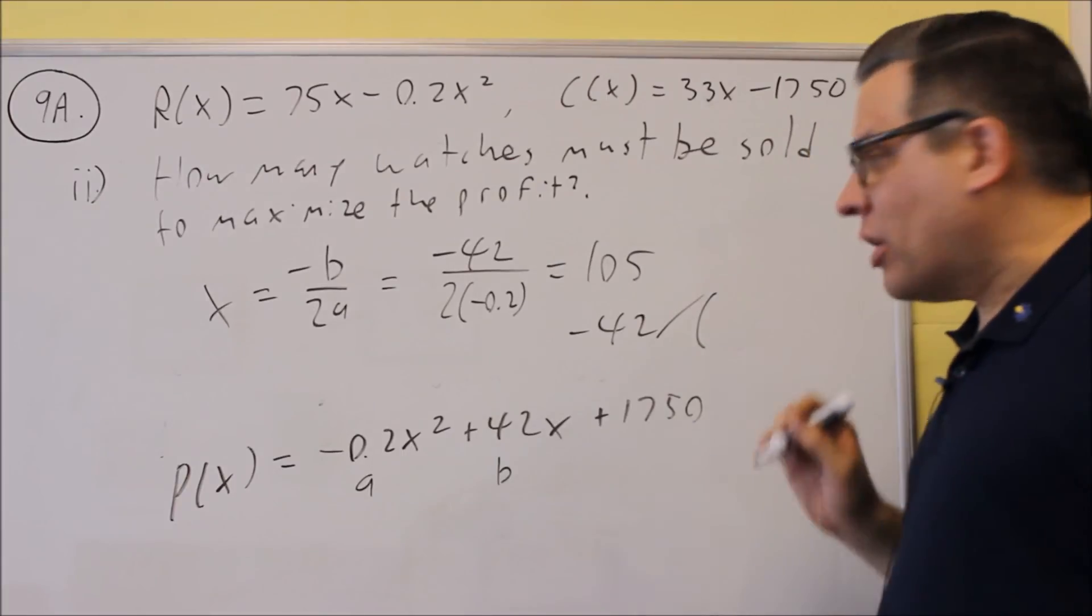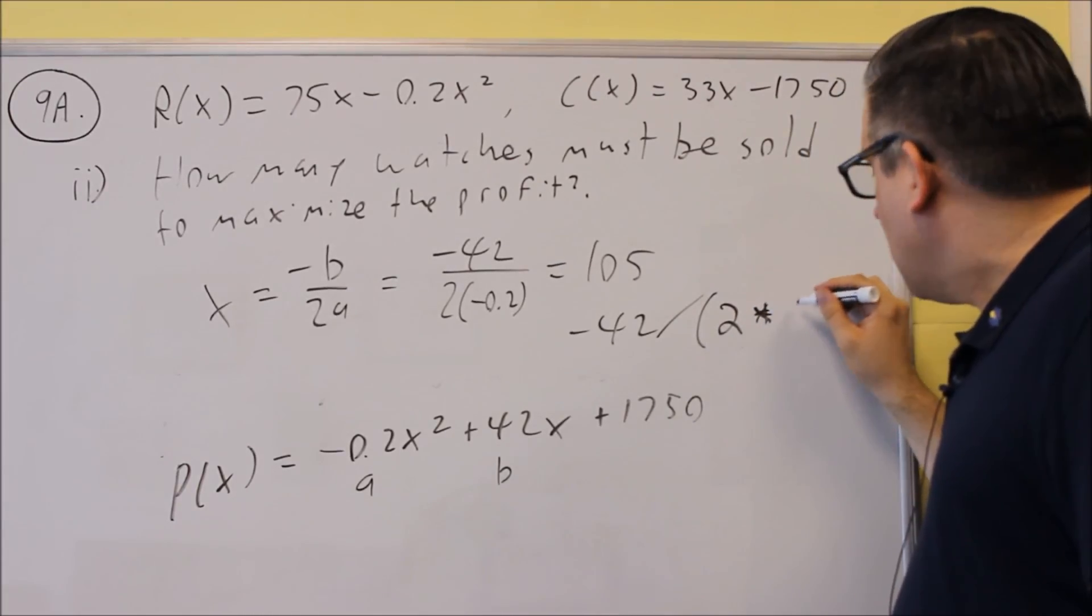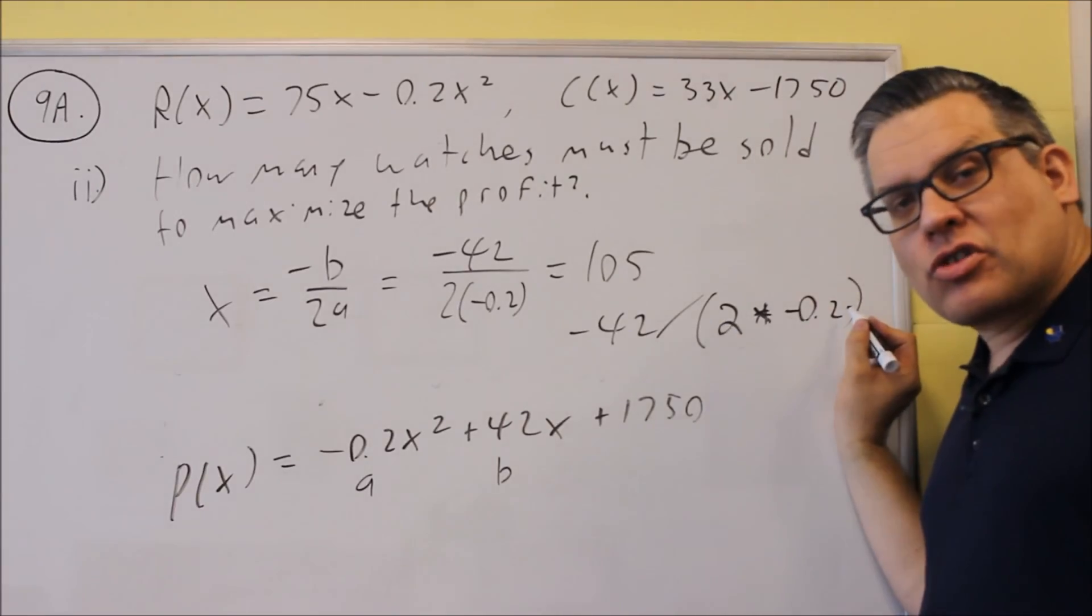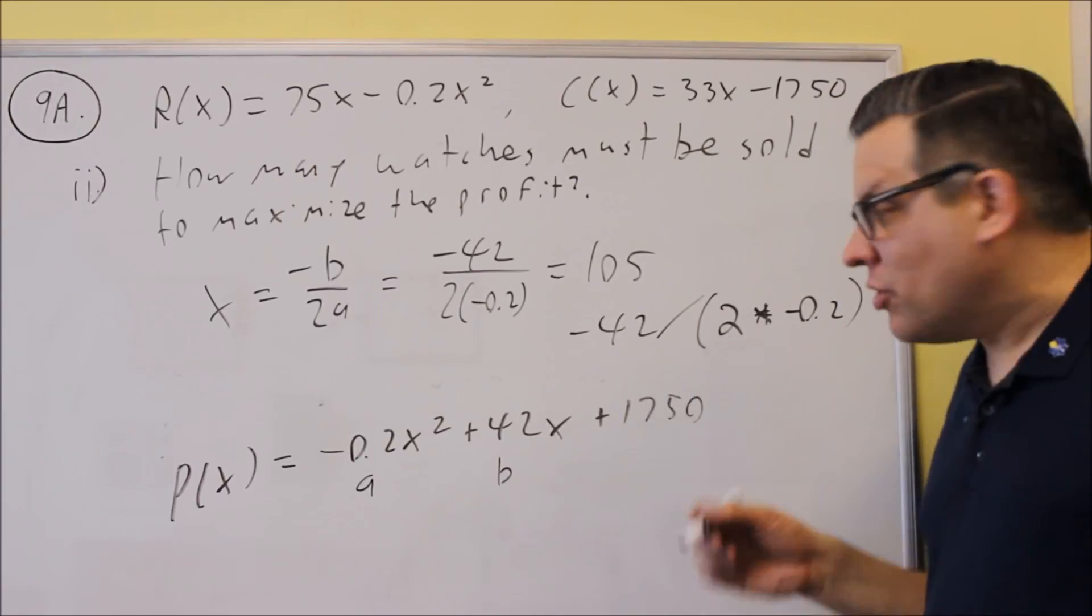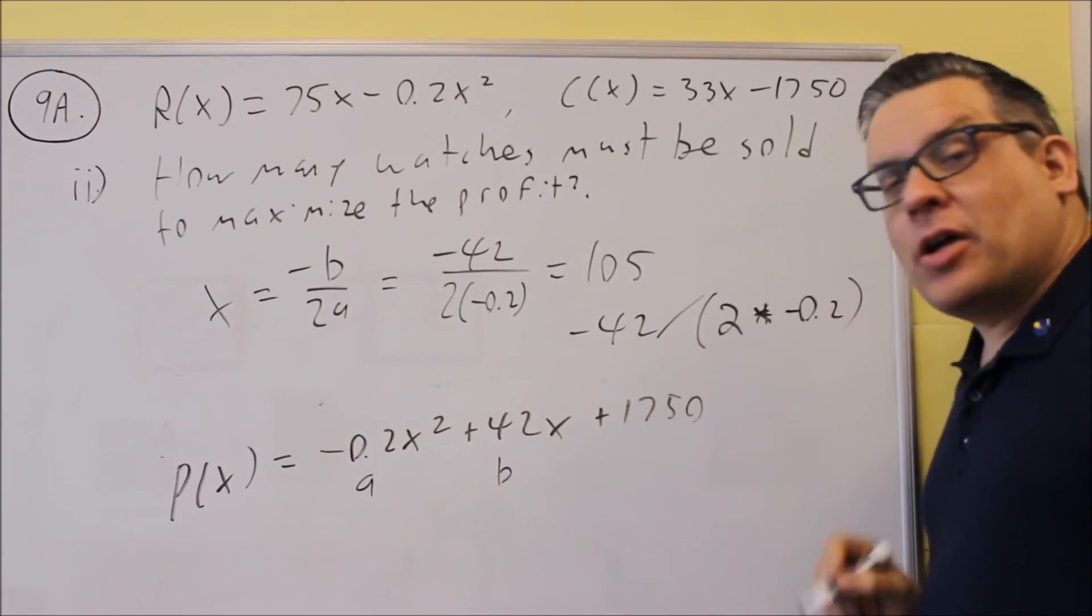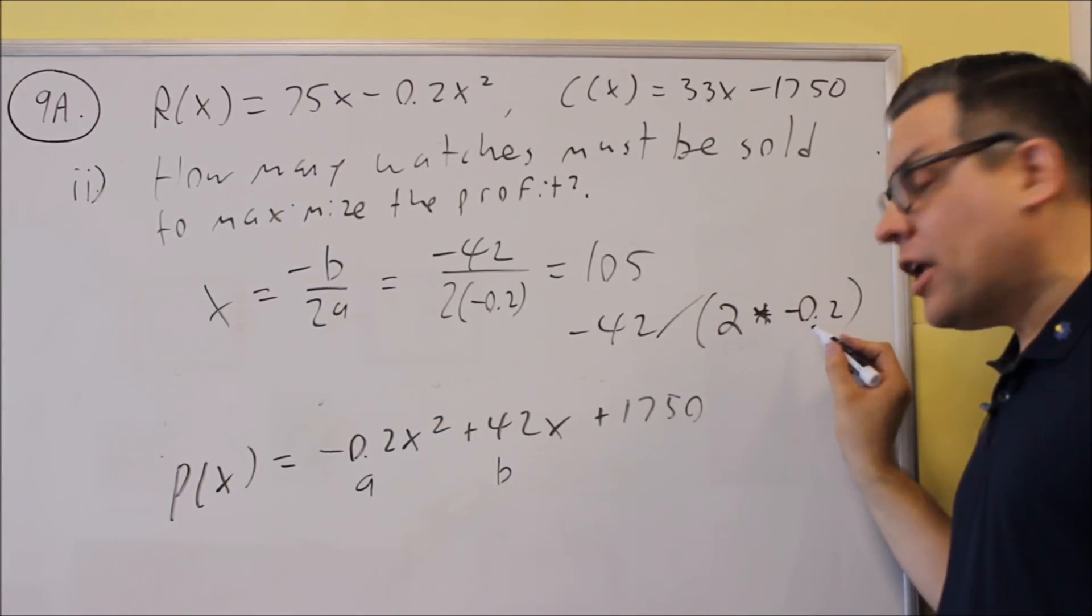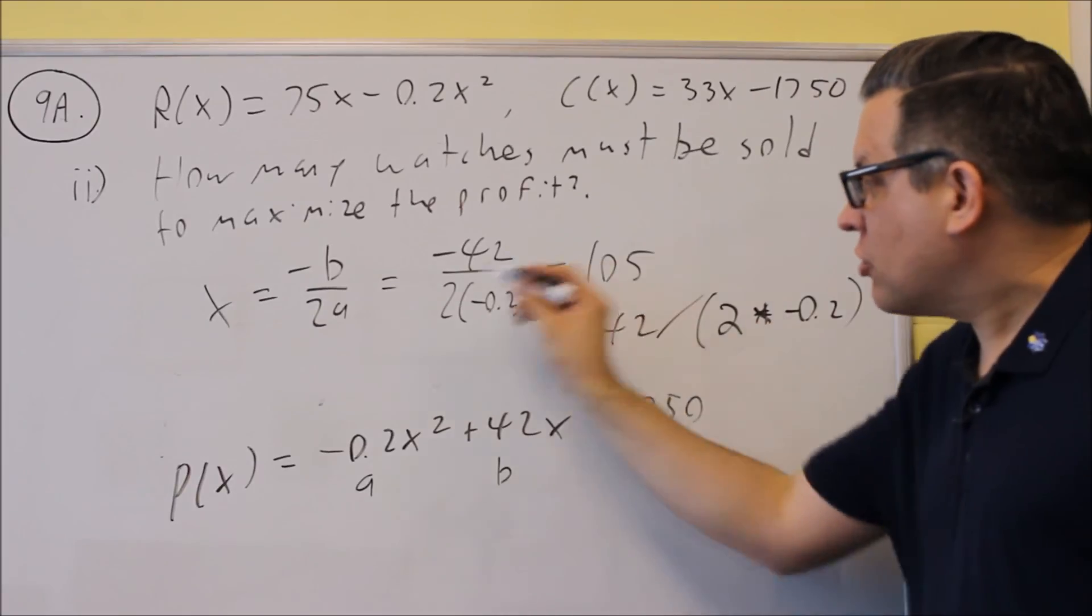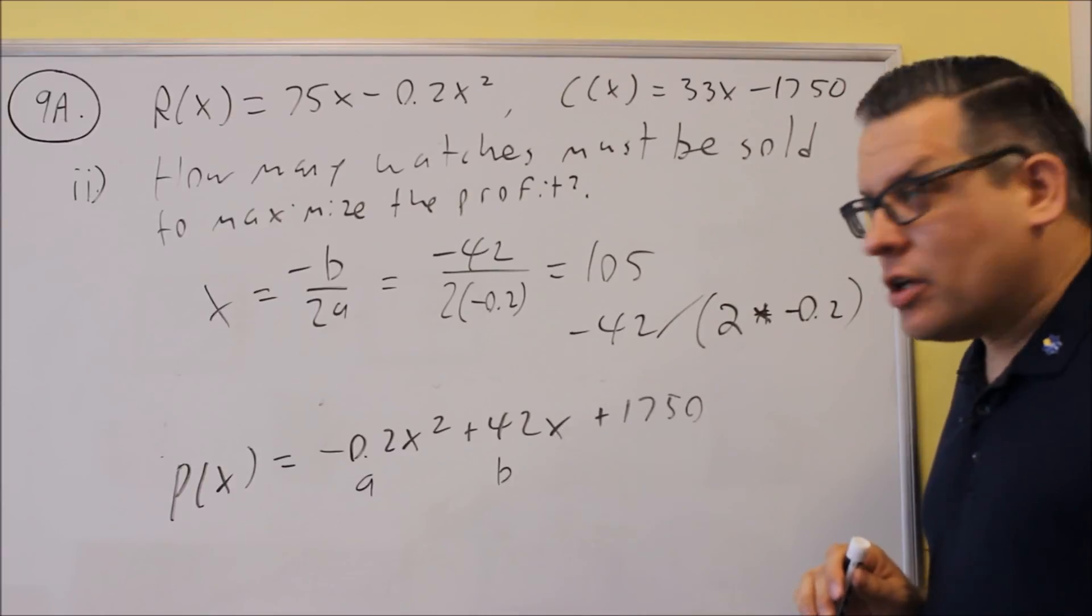So when you put that into a calculator, do negative 42, slash, open parenthesis, 2 times negative 0.2, close parenthesis. If you don't put parentheses around it, you're going to get the wrong answer because the calculator is not smart enough to know that you meant to divide by that whole thing. It'll just divide by the first number and multiply the result by negative 0.2. The correct answer should be 105.